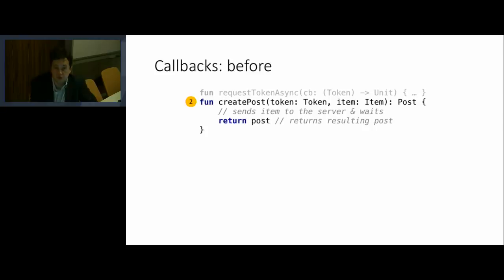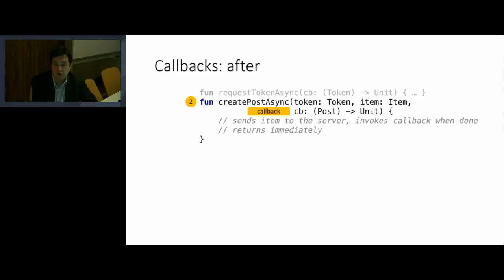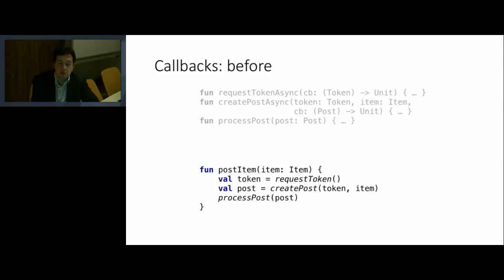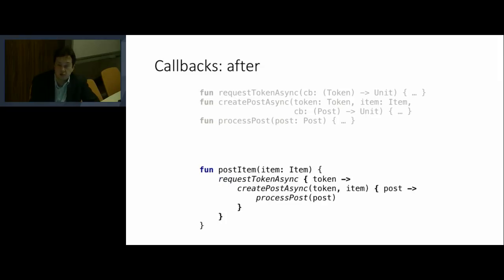If we have another function which actually creates a post — that should also wait until the server does anything — we also turn it into a callback. We add a callback as an extra parameter, and again the result type turns into the callback. So if our next step is post-processing, we can write our three-step procedure that takes a token, creates a post, and processes it. That would be the usual code we would write, if not for asynchrony. But if we want it to be asynchronous and use callbacks, that simple three-step code is turned into something much more complex.